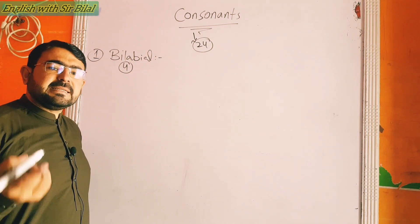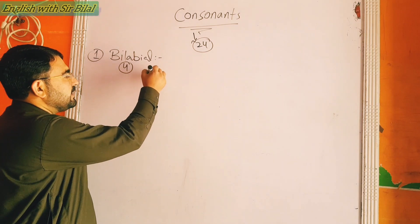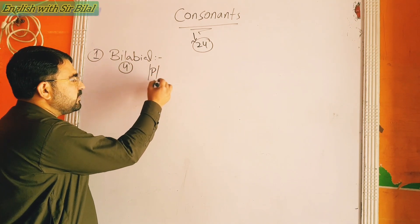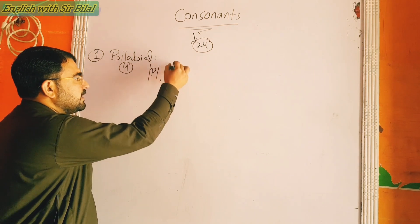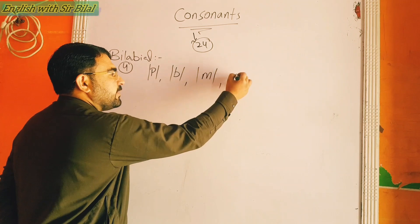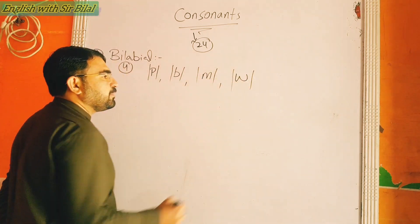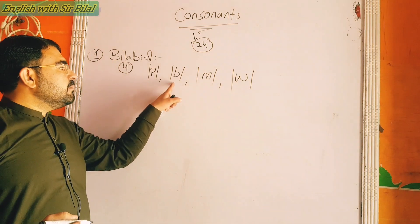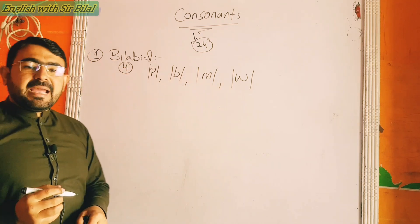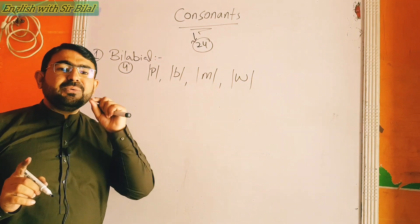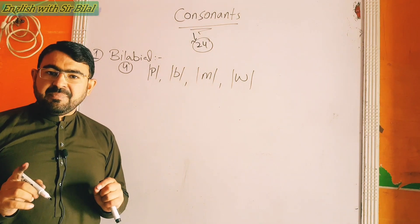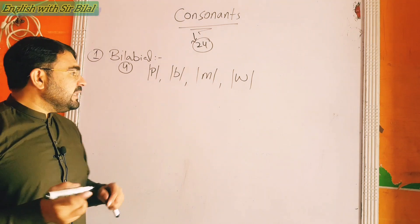Let's revise: the first sound of that unit, the second sound, the third sound, and the fourth sound. Bilabials are produced with the help of lips — whenever you use your lips you will produce bilabial sounds.